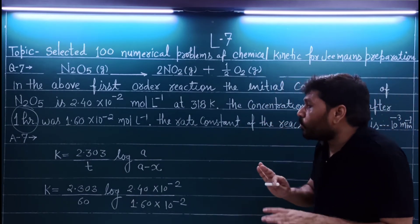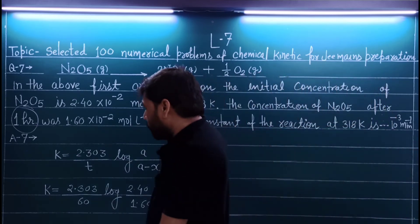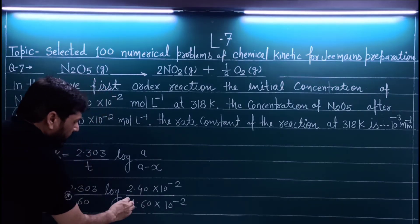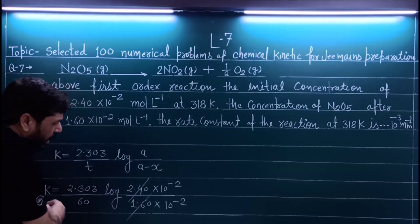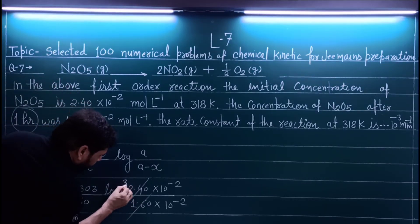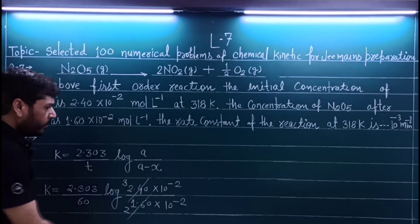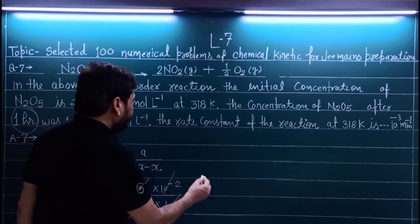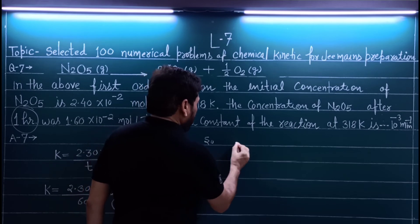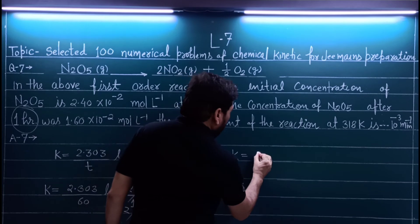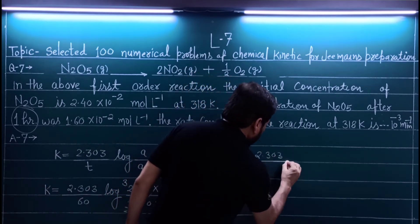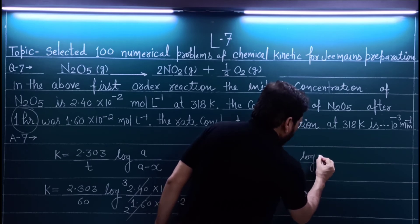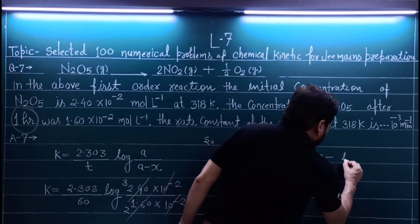This is a very simple question — nothing special needs to be done. Now simplify: the 10⁻² terms cancel each other. Then 2.40 divided by 1.60 — this simplifies to 3/2 after cancellation. So we are left with k = 2.303/60 × log(3/2), which equals log 3 minus log 2.